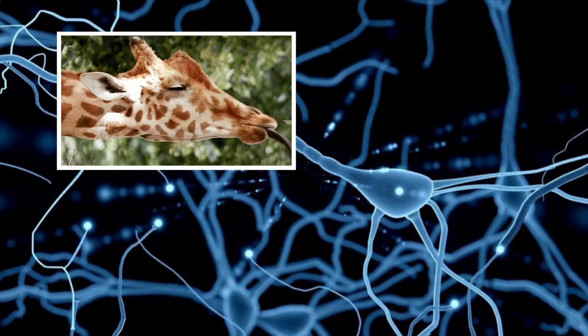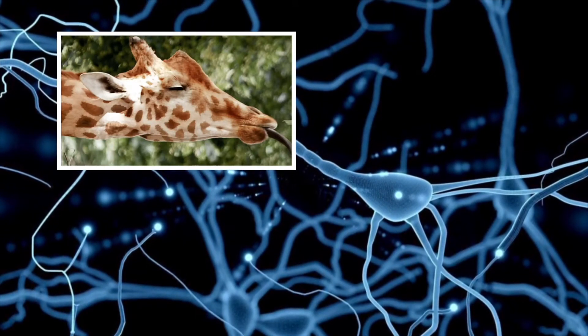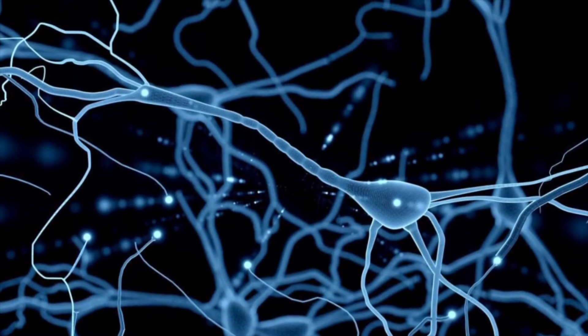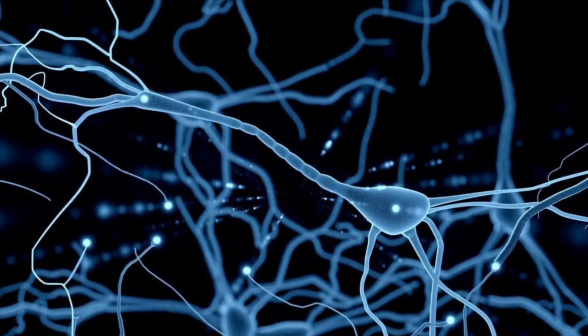An axon from the toe to the neck of a giraffe can be almost 15 feet long. Think about all the neurons in your body and how well they must work together.